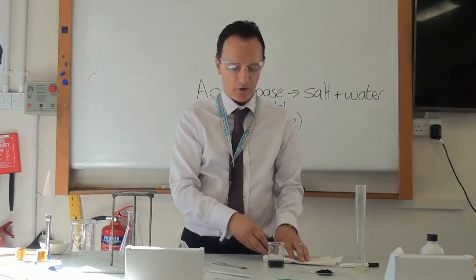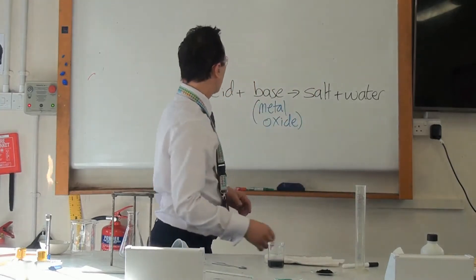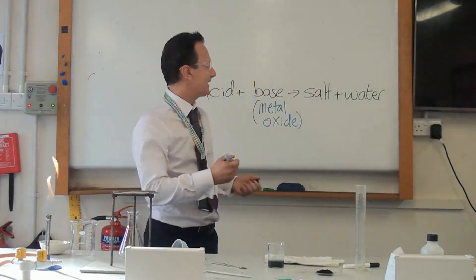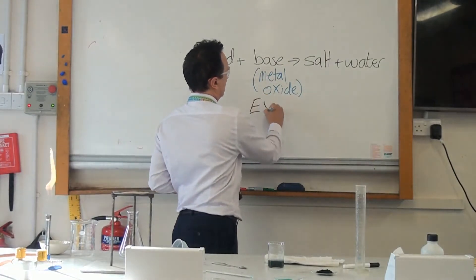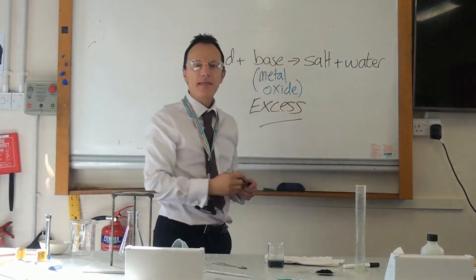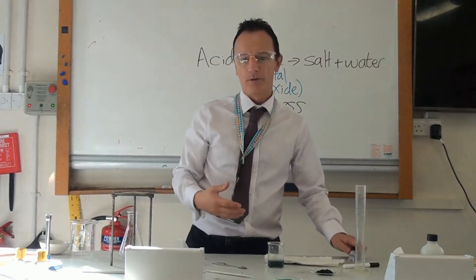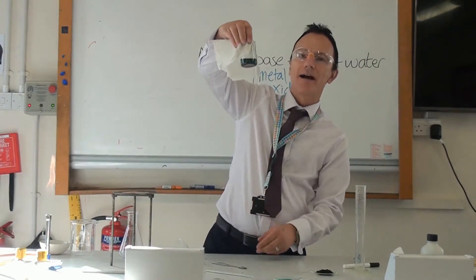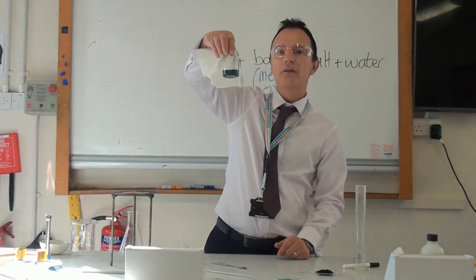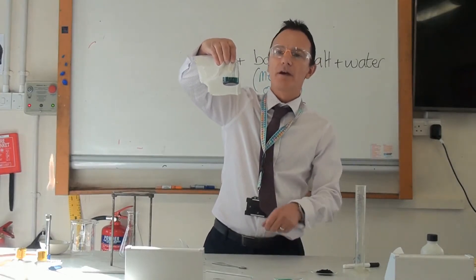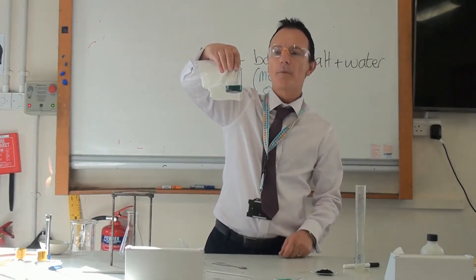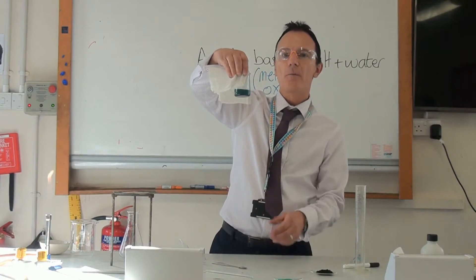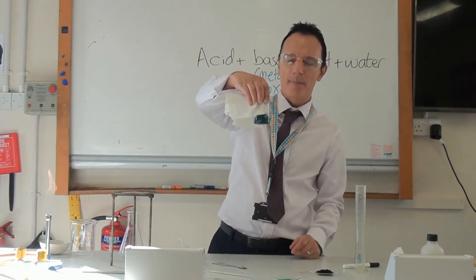Before long we will start to see some copper chloride forming. We will see the colour change into a blue colour. How much copper oxide do we add? The answer is we add excess — that means we are adding more than we need. There might still be some unreacted hydrochloric acid, so we keep adding more copper oxide until we are sure there is no more acid to react. We will know because the copper oxide will settle to the bottom and we will see the black powder forming.